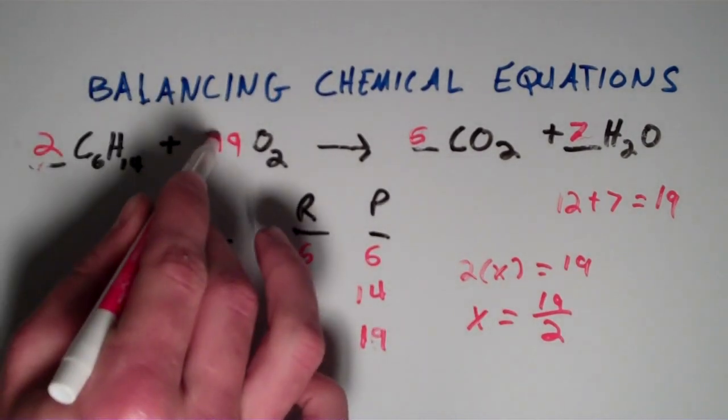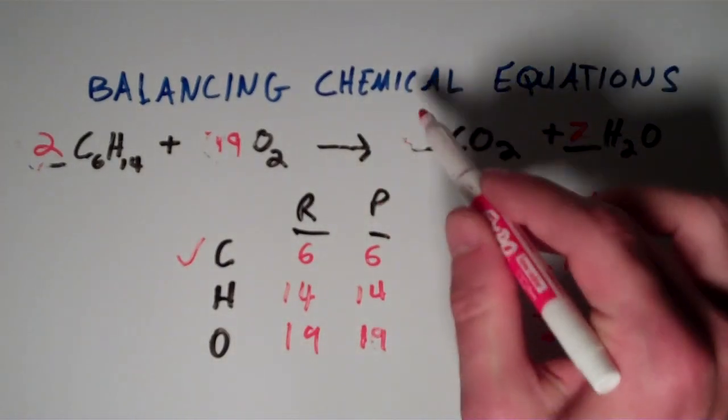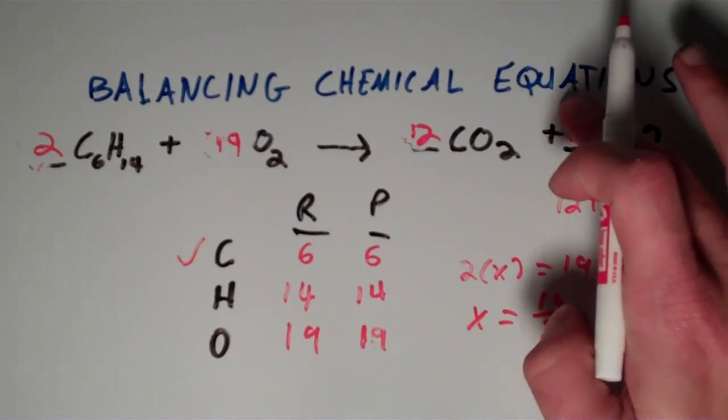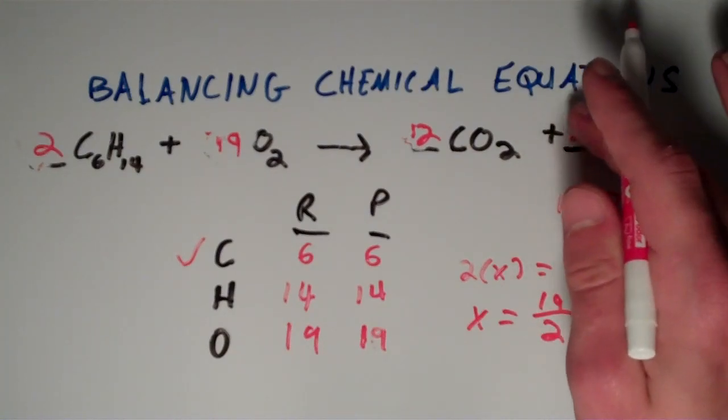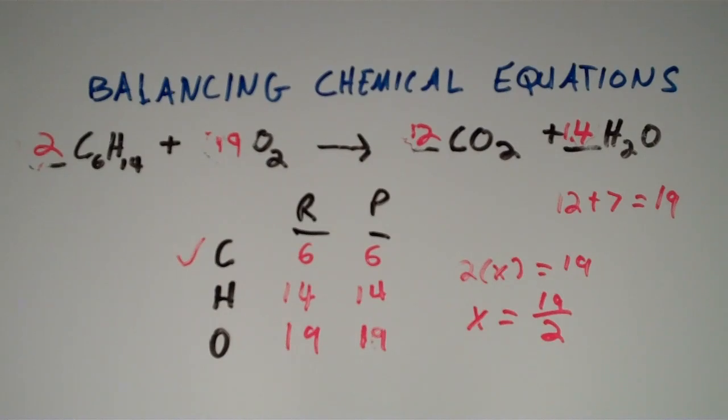6 times 2 is 12. And 7 times 2 is 14. So there you have it.